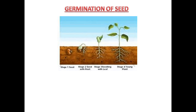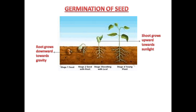Now we will learn about germination of seeds. When you sow a seed in soil, the baby plant inside has two parts: one is the root, which grows downward towards gravity, and the other is the shoot, which grows upward towards sunlight. This shoot grows further into a new plant — that's how a seed grows into a new plant.